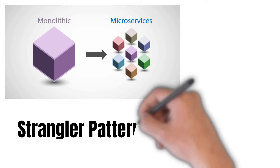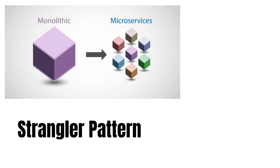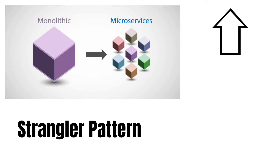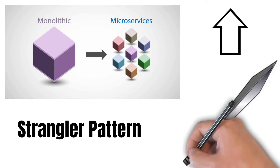We have already learned about the strangler pattern, which says that we should pursue this migration in a phase-wise approach. We should migrate services phase by phase into separate microservices. A detailed link for the strangler pattern is given at the top of the screen — you may watch it if you're interested.